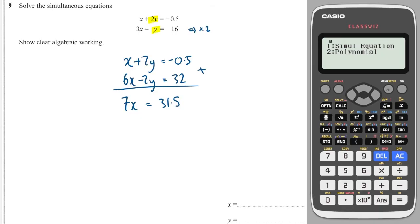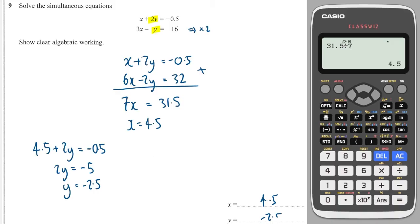I'll then go to my calculator and I will do 31.5 divided by 7. And that will give me 4.5. So x is equal to 4.5. I'll then use the top one to substitute back in to find y. Minus 4.5 to both sides. And then divide through by 2. It gives me minus 2.5. So I have 4.5 and minus 2.5.